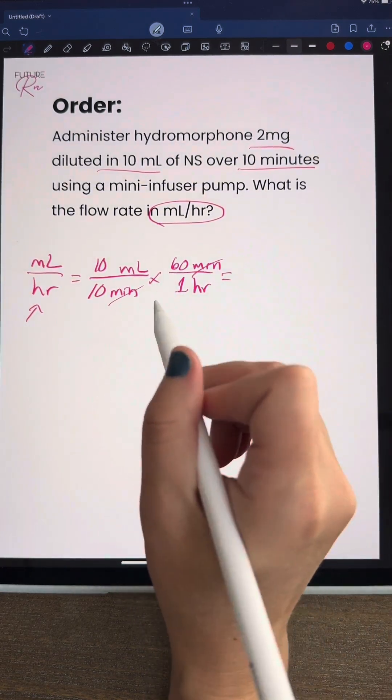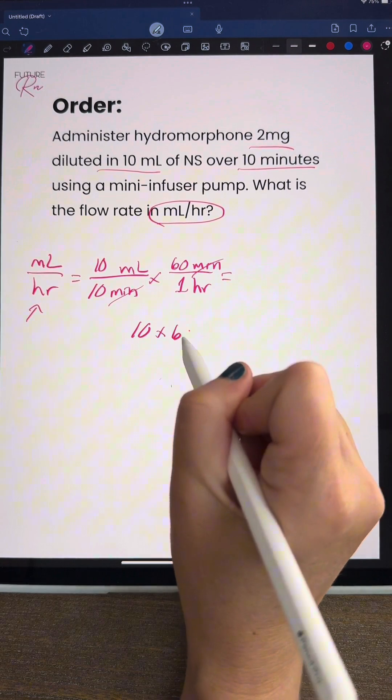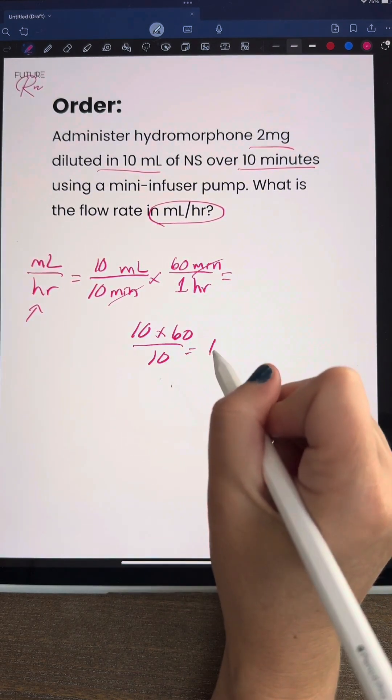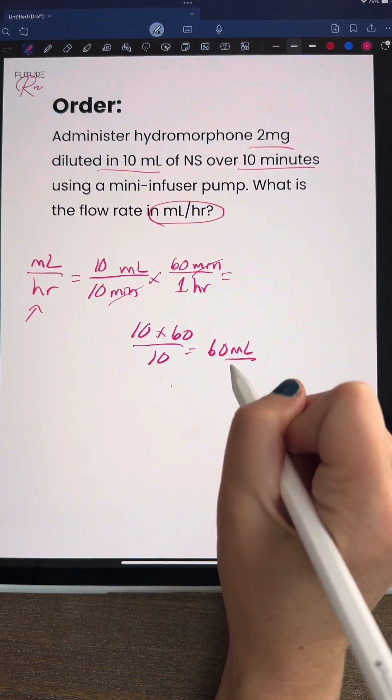Once we do this multiplication across, we're going to do 10 times 60 divided by 10 and we're going to come out with 60 milliliters per hour.